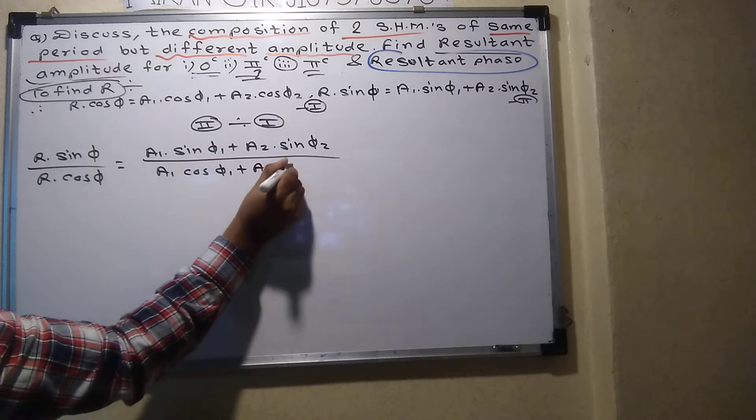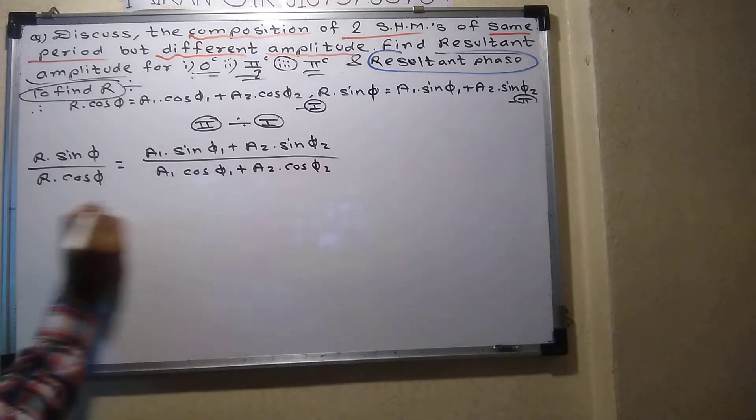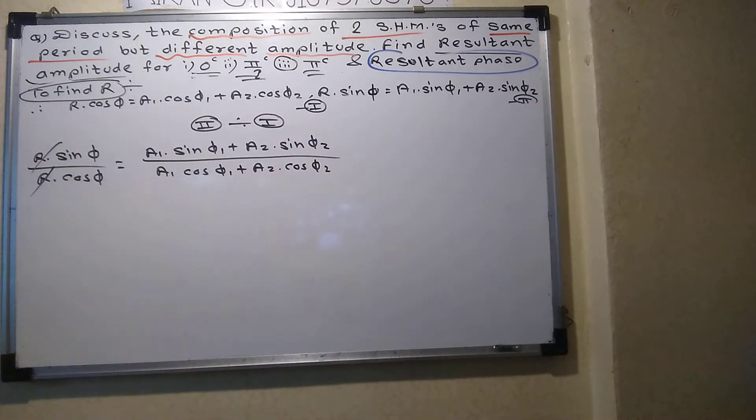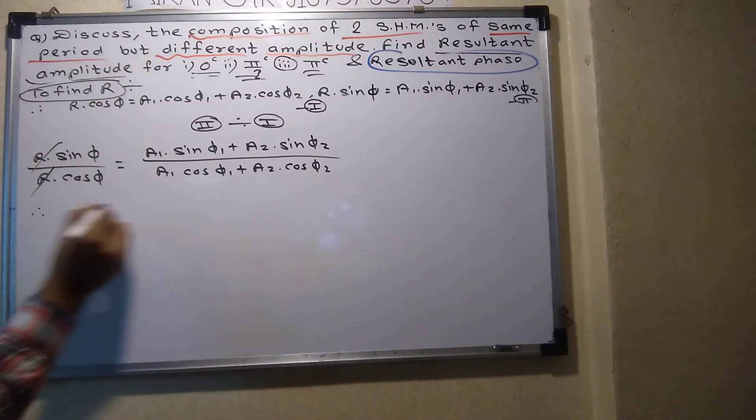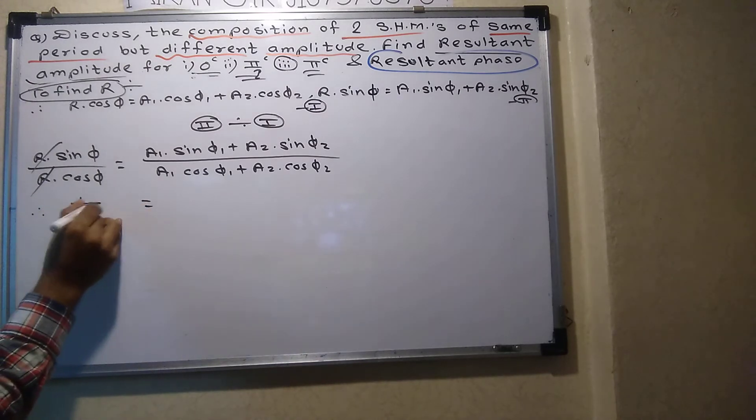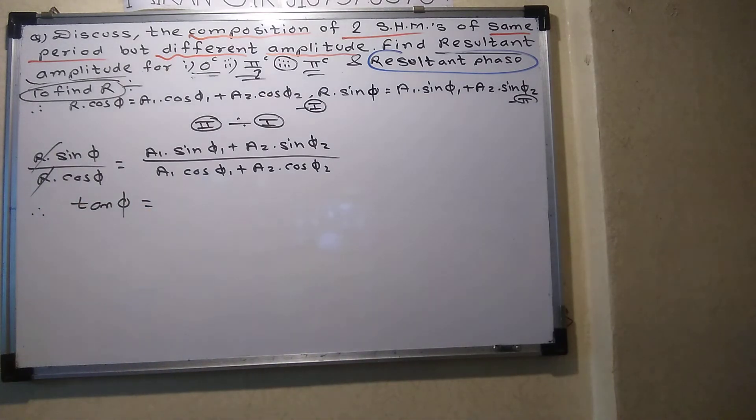Here we observe that R, R get cancelled. What is sine upon cos? Sine theta upon cos theta is tan theta. So sine upon cos is tan phi.